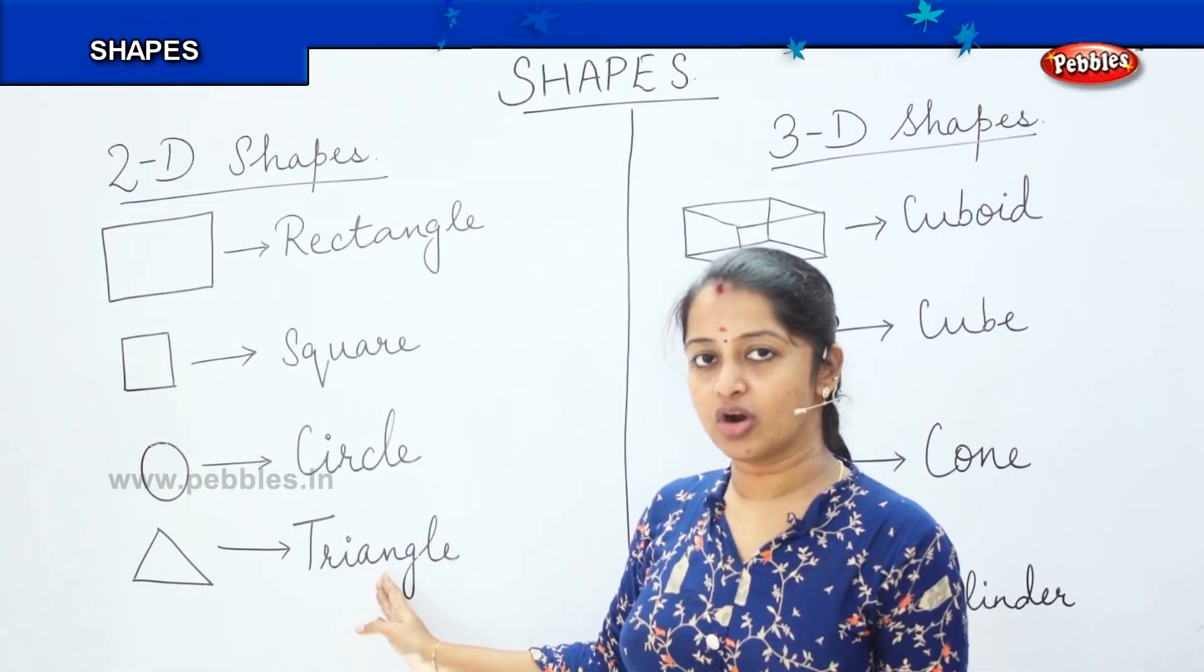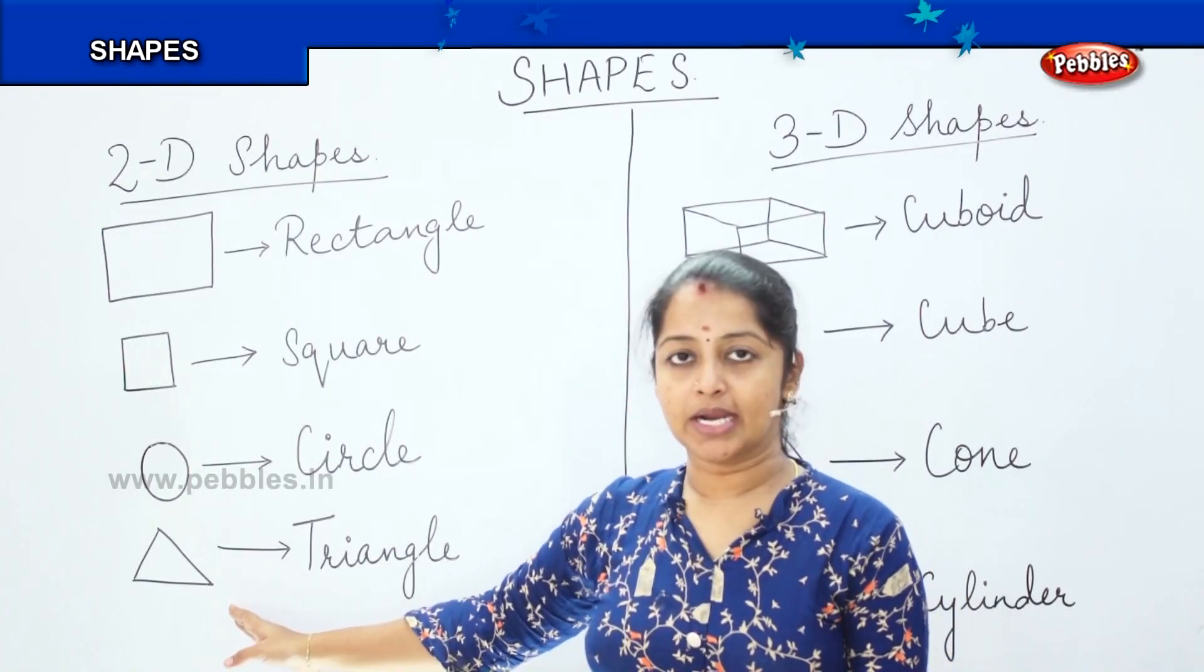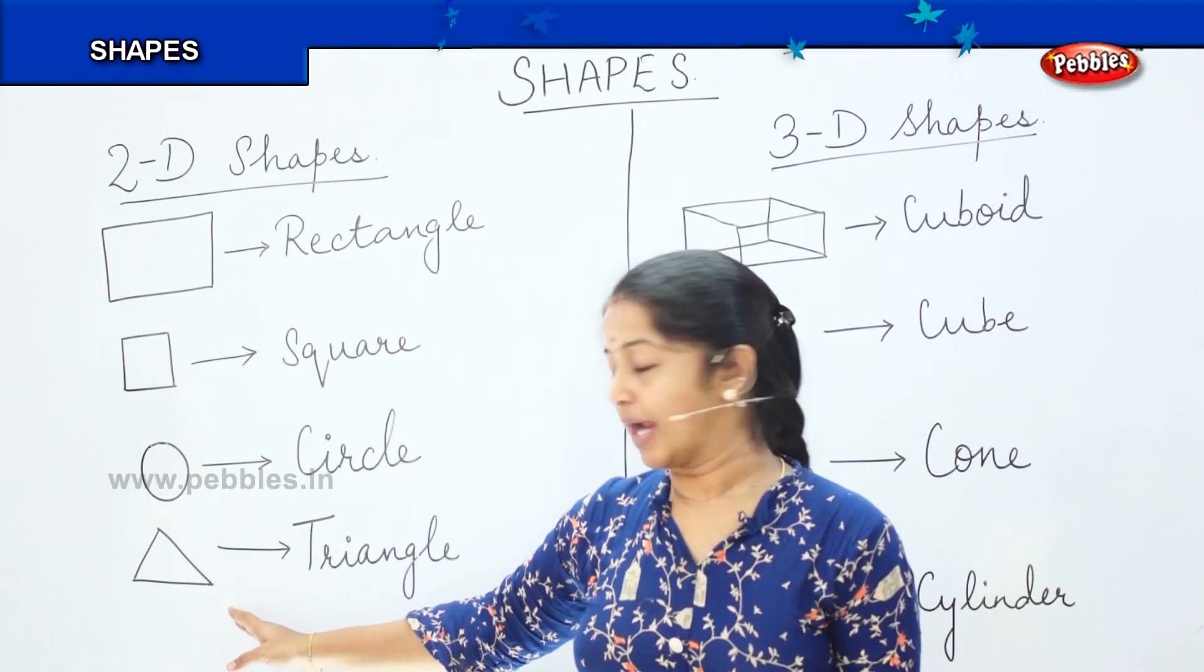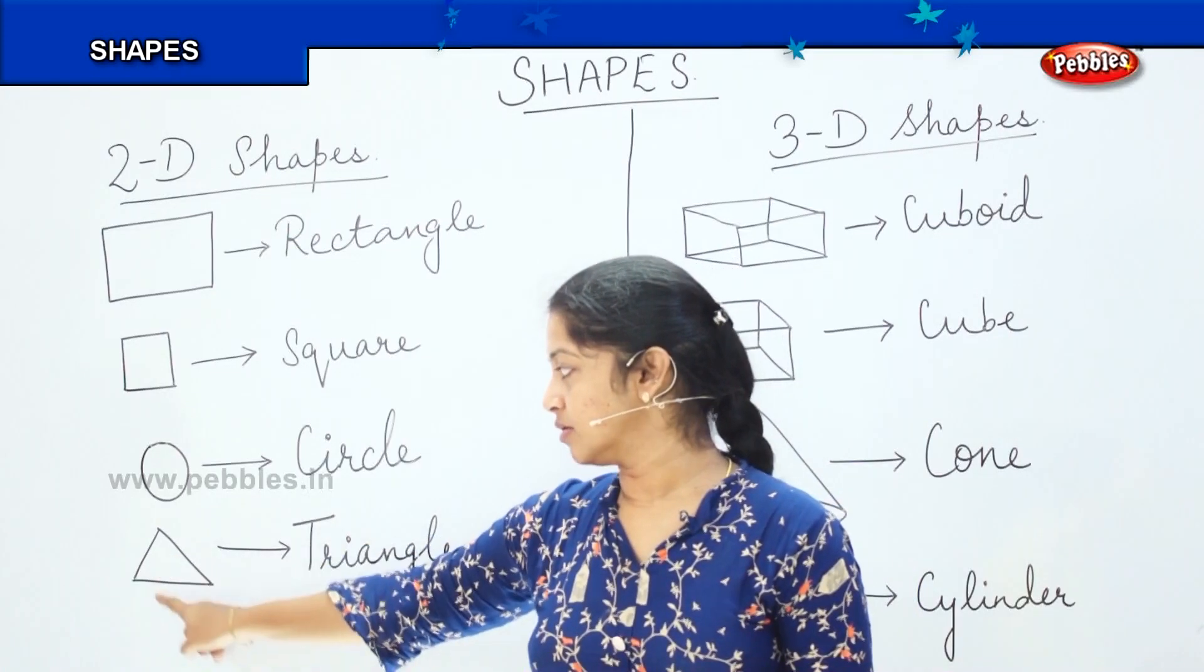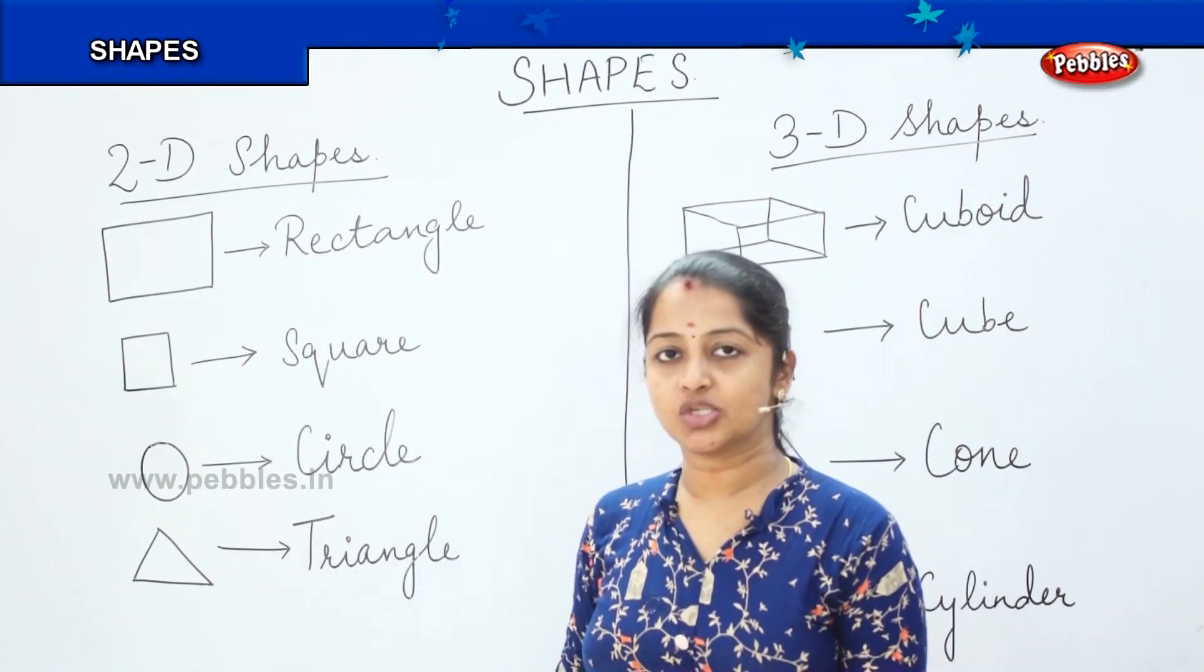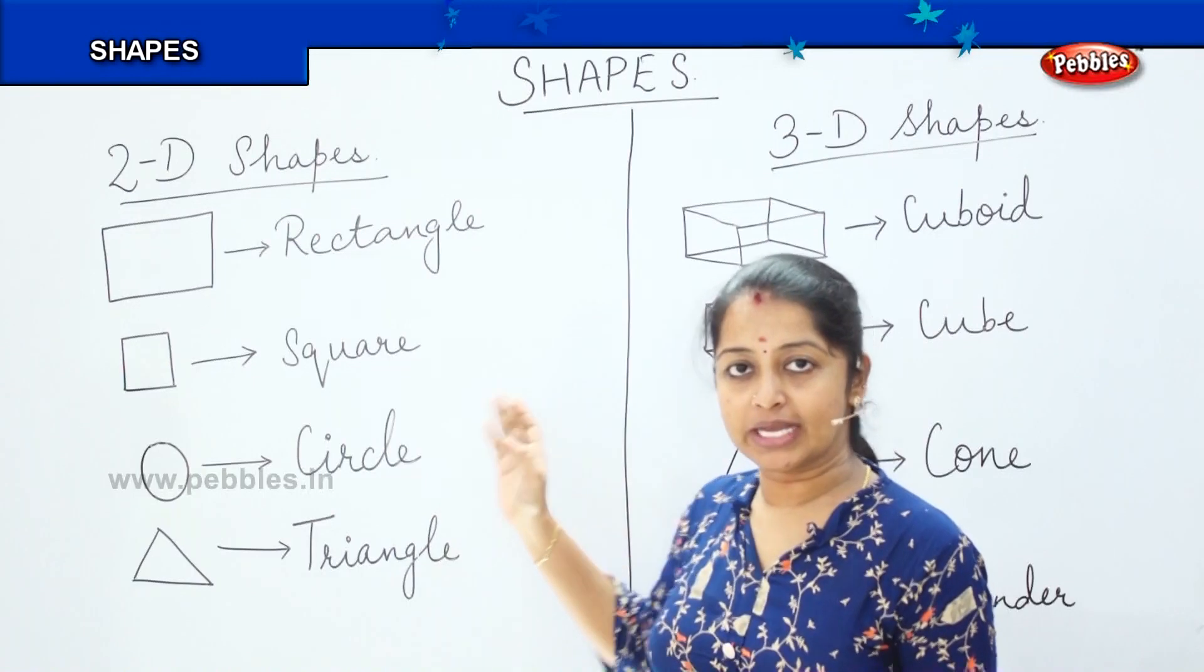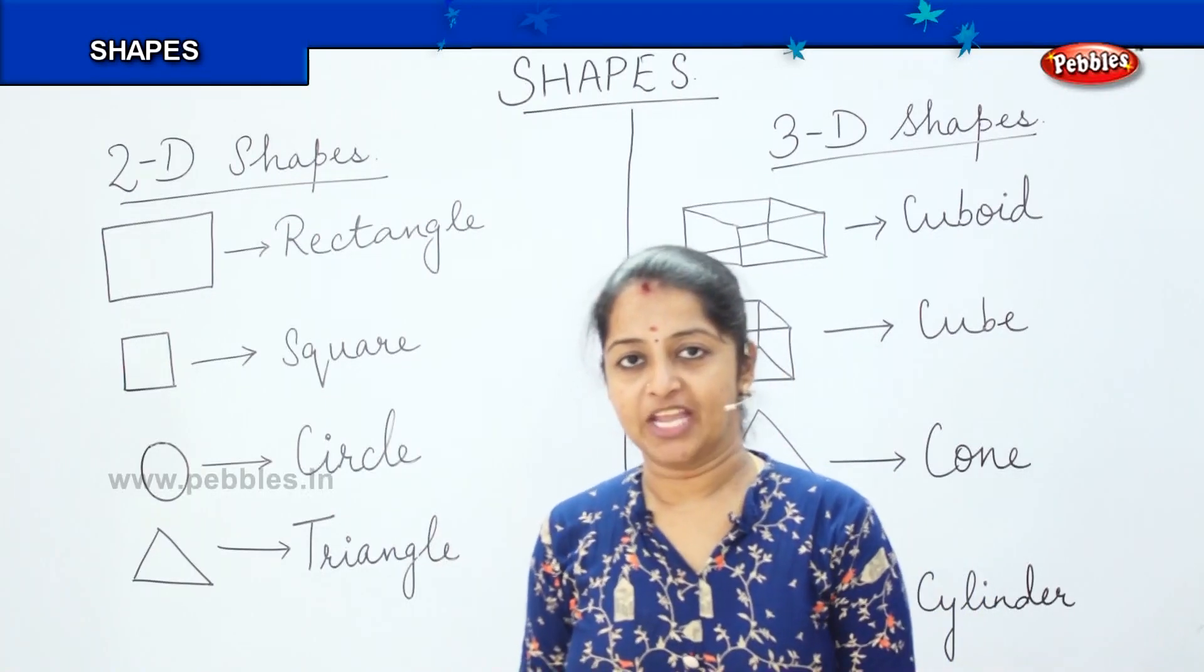What is the last shape here drawn? Yes, this is a triangle. And how many sides a triangle has? One, two and three. There are three sides in a triangle. And why are these sides, why are these shapes called as a 2D shape? Can you tell me?